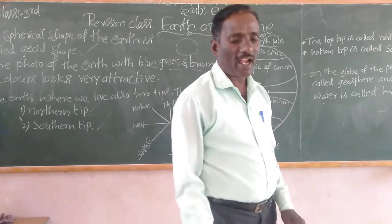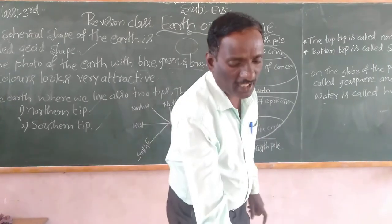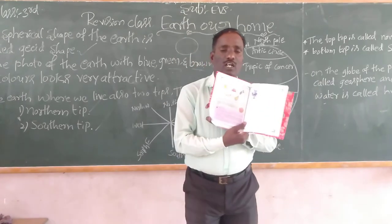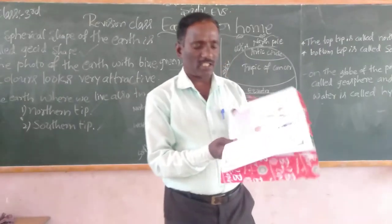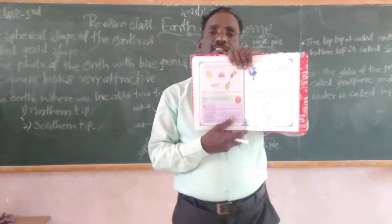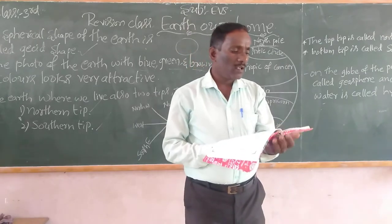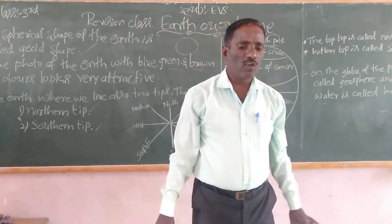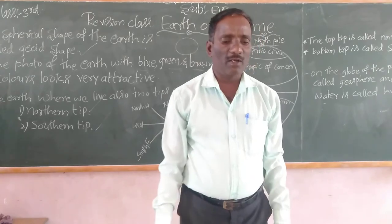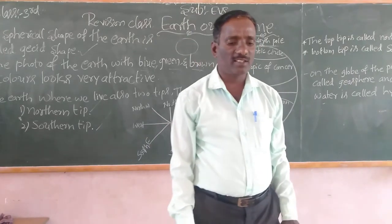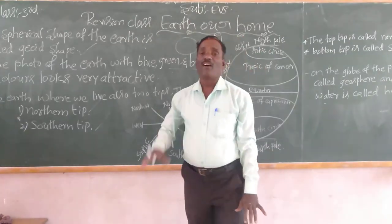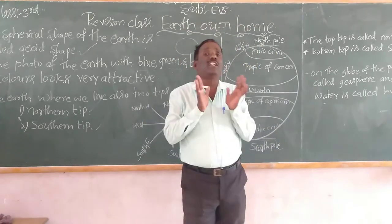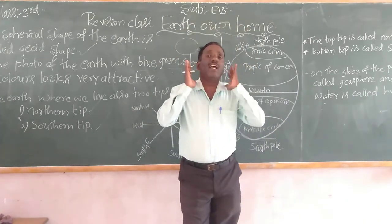In your textbook, look at the picture once again — page number 177. Which one of the pictures given below most resembles the shape of the earth? For example, an orange and an apple most resemble the shape of the earth.